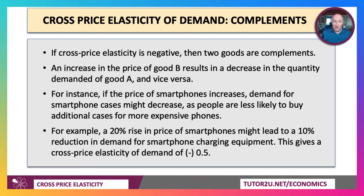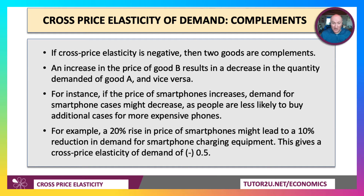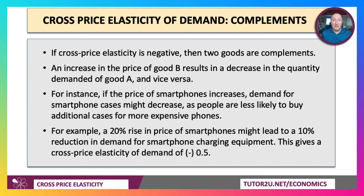For two complements, the cross-price elasticity is negative. An increase in the price of good B leads to a fall in demand for good A. For example, if the price of smartphones jumps, people might buy fewer smartphone cases. A 20% rise in the price of smartphones might lead to a 10% fall in the demand for charging equipment, giving a negative cross-price elasticity of minus 0.5.